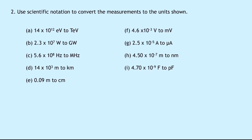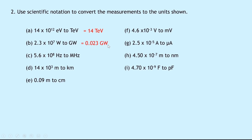Moving on to the second question now. It says use scientific notation to convert the measurements to the units shown. This time we're converting back into prefixes from normal units. In part A we've got 14 times 10 to the 12 electron volts. Tera is times 10 to the 12, so this just becomes 14 tera electron volts. In part B we've got 2.3 times 10 to the 7 watts to gigawatts. Giga is times 10 to the power of 9, so we need to move the decimal place two places to the left and we get 0.023 gigawatts.